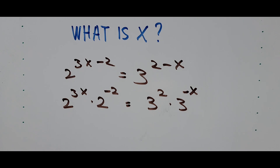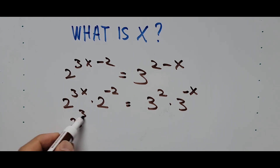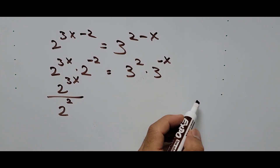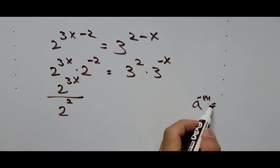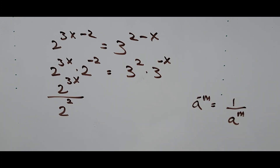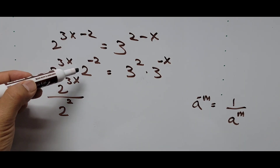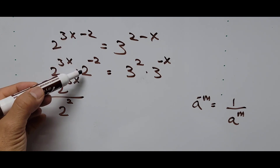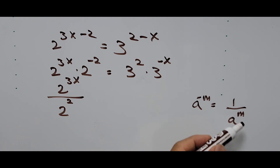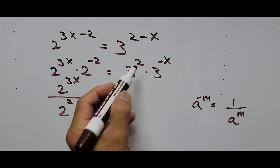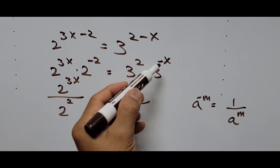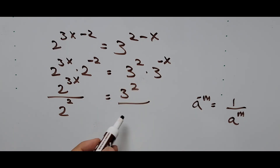Simplifying further, we take the negative exponent: 2 raised to negative 2 moves to the denominator becoming positive, so the left side becomes 2 raised to 3x divided by 2 raised to 2. The exponent rule is: a raised to negative m equals 1 over a raised to positive m. Similarly, the right side becomes 3 squared divided by 3 raised to x.